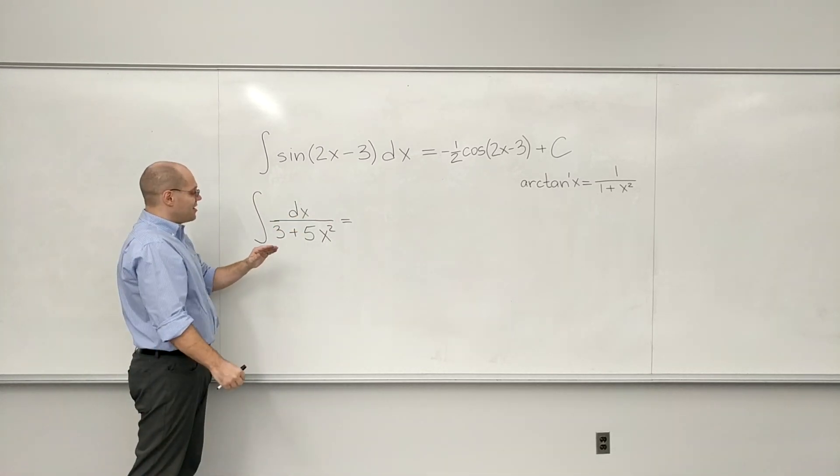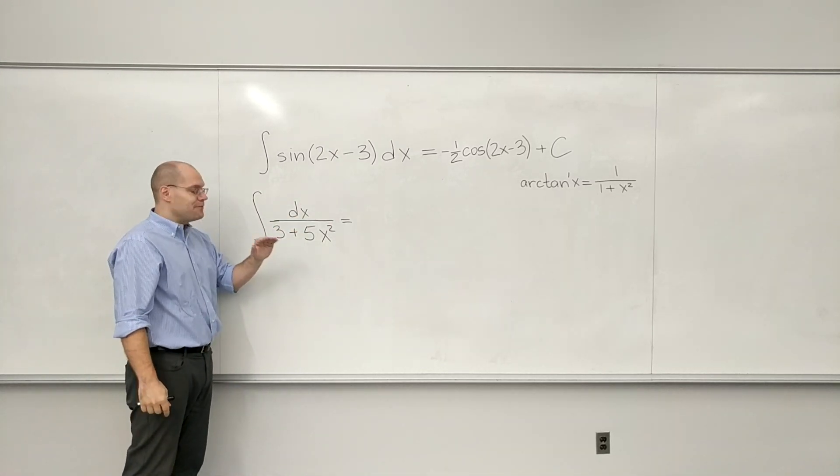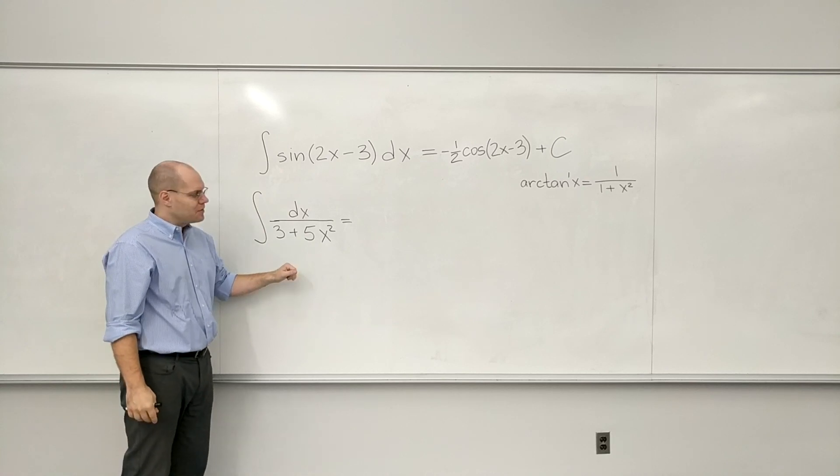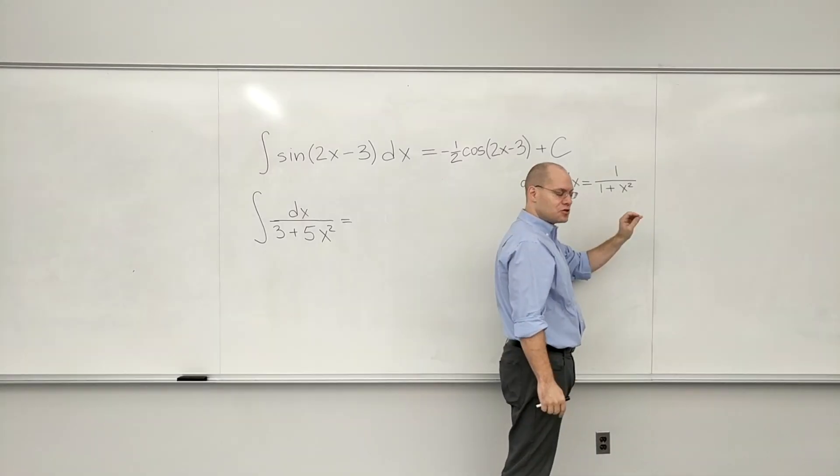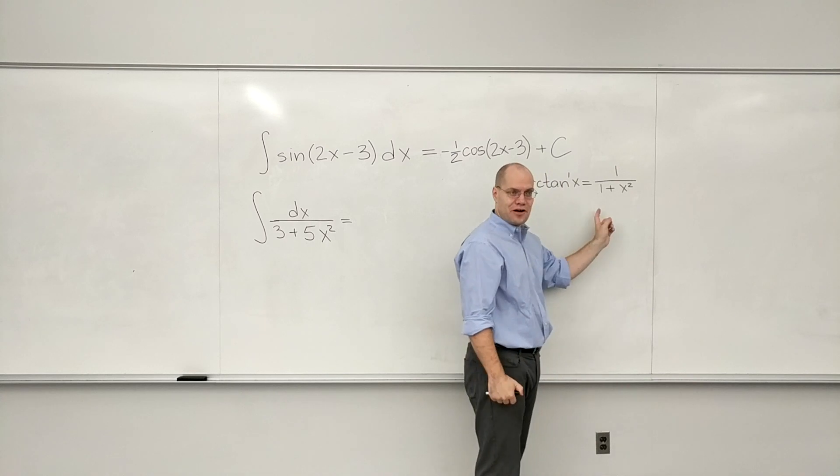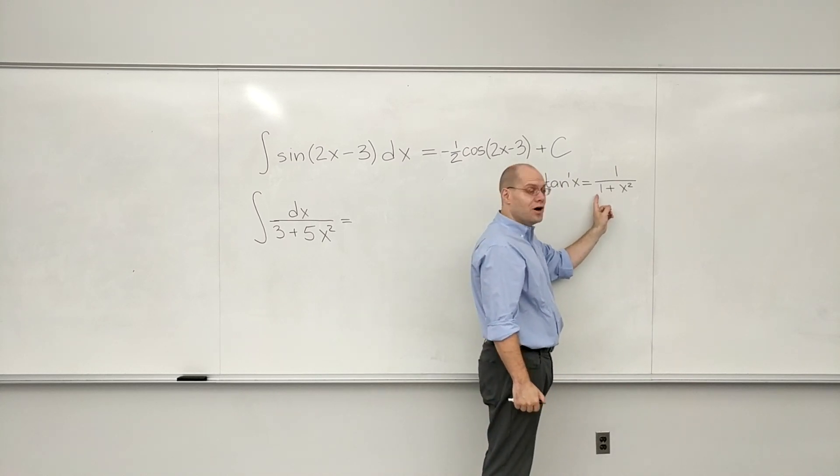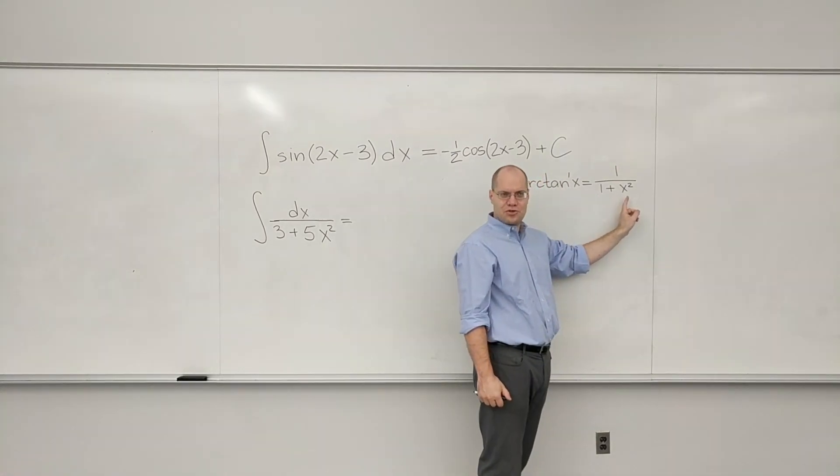This is one step further in difficulty when it comes to matching patterns. So an important feature in the derivative of arc tan is that it's 1 plus a quantity squared.